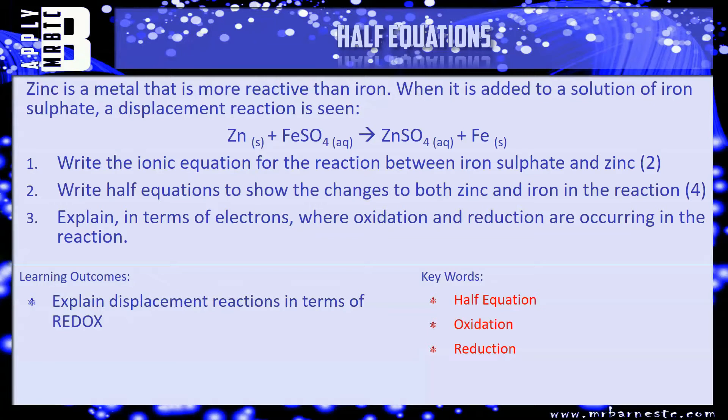So I've got a question here that says zinc is a metal that is more reactive than iron. When it's added to a solution of iron sulfate, a displacement reaction is seen. You've got the simple equation: Zn (s) + FeSO4 (aq) → ZnSO4 (aq) + Fe. So the first question is write the ionic equation for the following reaction between iron sulfate and zinc. So to do this, remember your sulfate is SO4 2-. If it's SO4 2-, then iron and zinc have both got to be 2+. Use that to do the ionic equation.